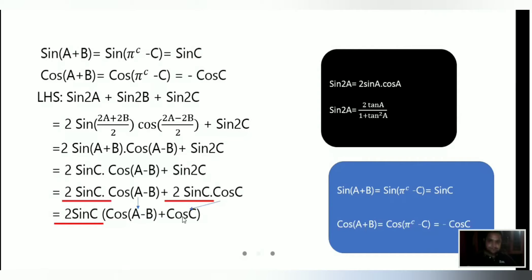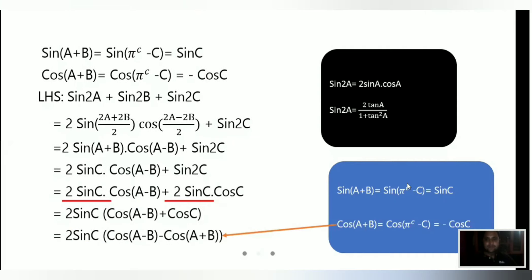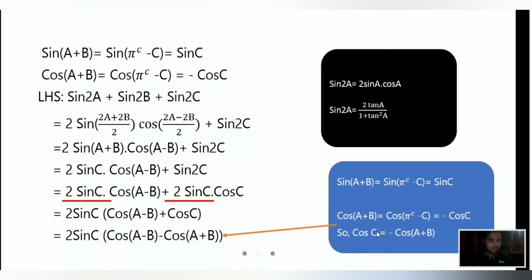Now, we previously found that cos(A+B) = -cosC. This means cosC = -cos(A+B). So in place of cosC inside the bracket, we substitute -cos(A+B), giving us 2sinC times the quantity cos(A-B) minus cos(A+B).